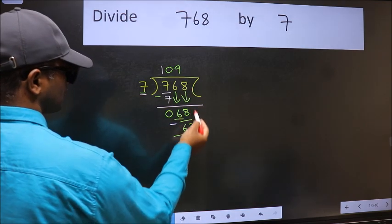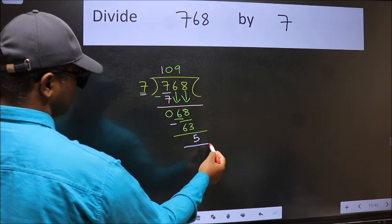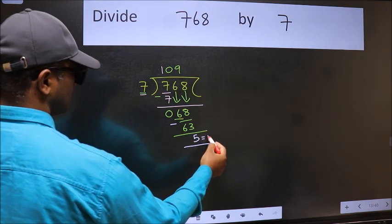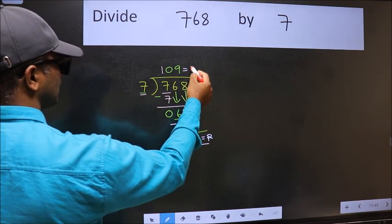No more numbers to bring down. So we stop here. This is our remainder and this is our quotient.